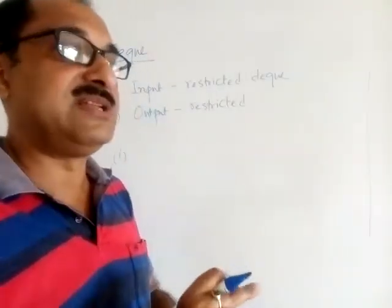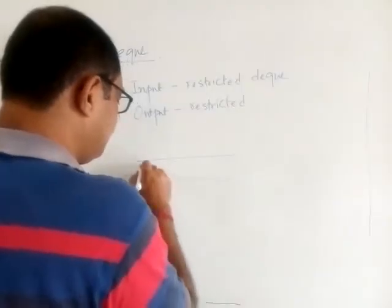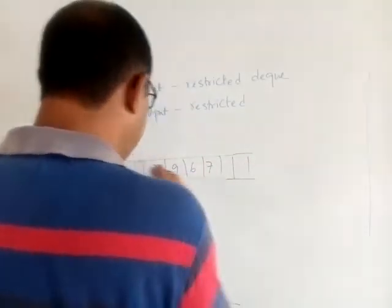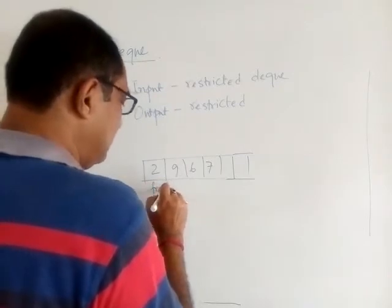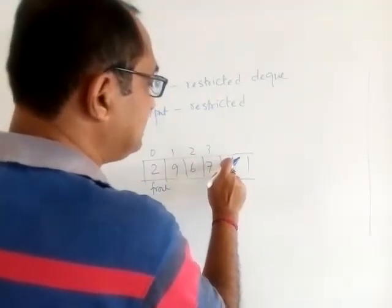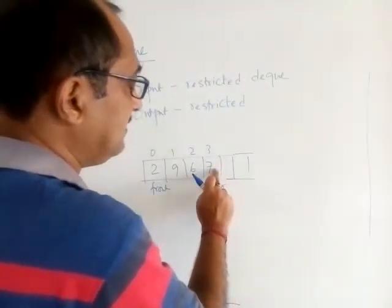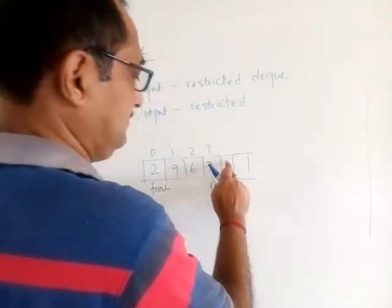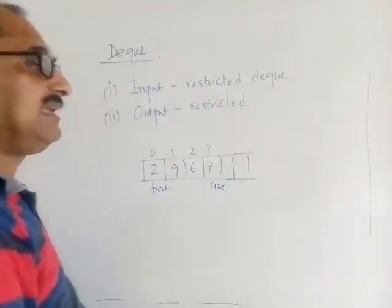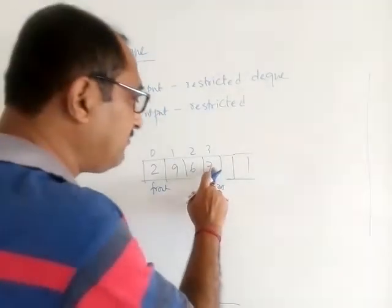In Input Restricted DQ, removal of elements (deletion) can take place from both ends. For example, if the queue has elements 2, 9, 6, 7 — with front at index 0 and rear at index 3 — insertion must come after 7 at the rear end, but deletion can happen from either end.